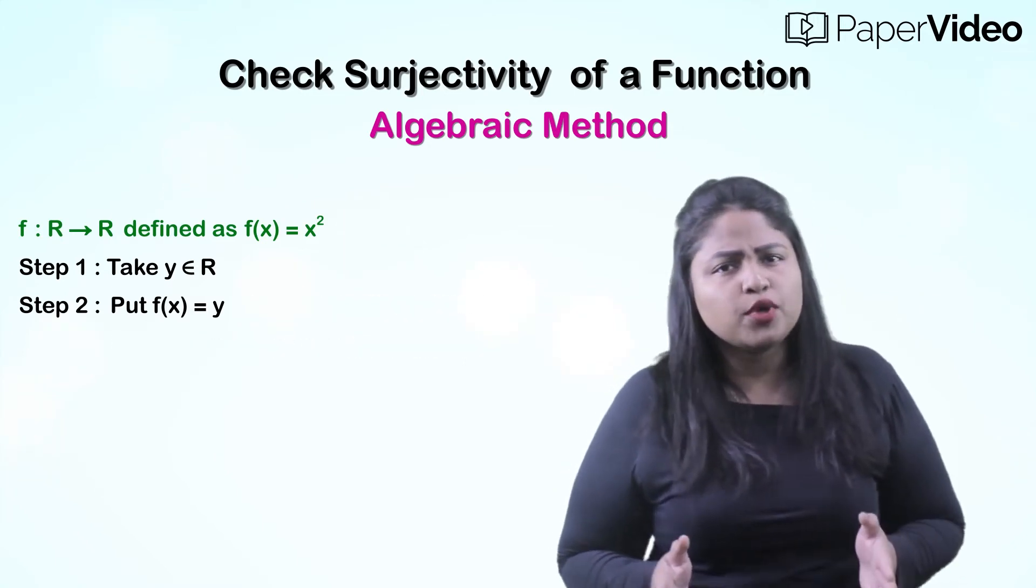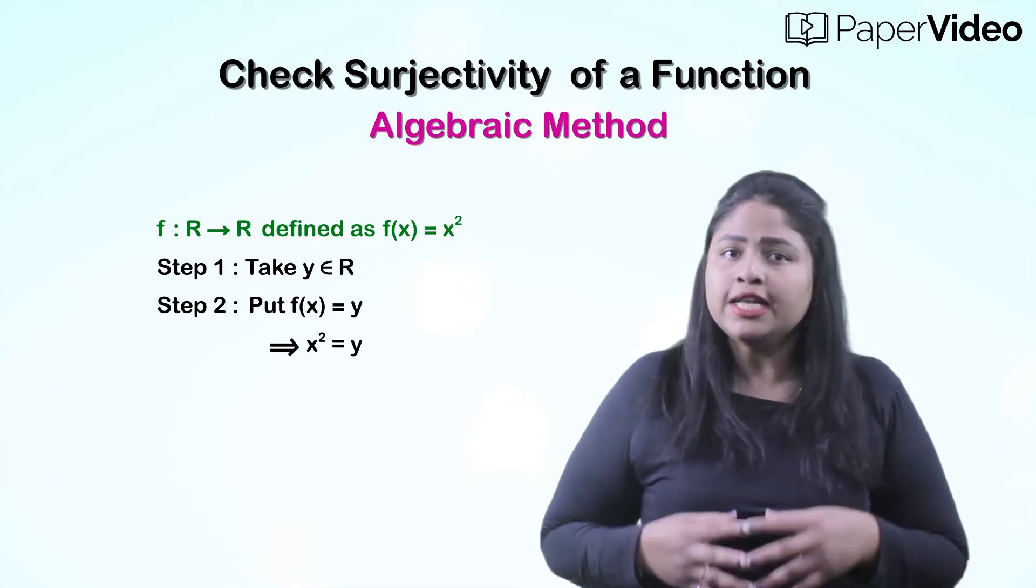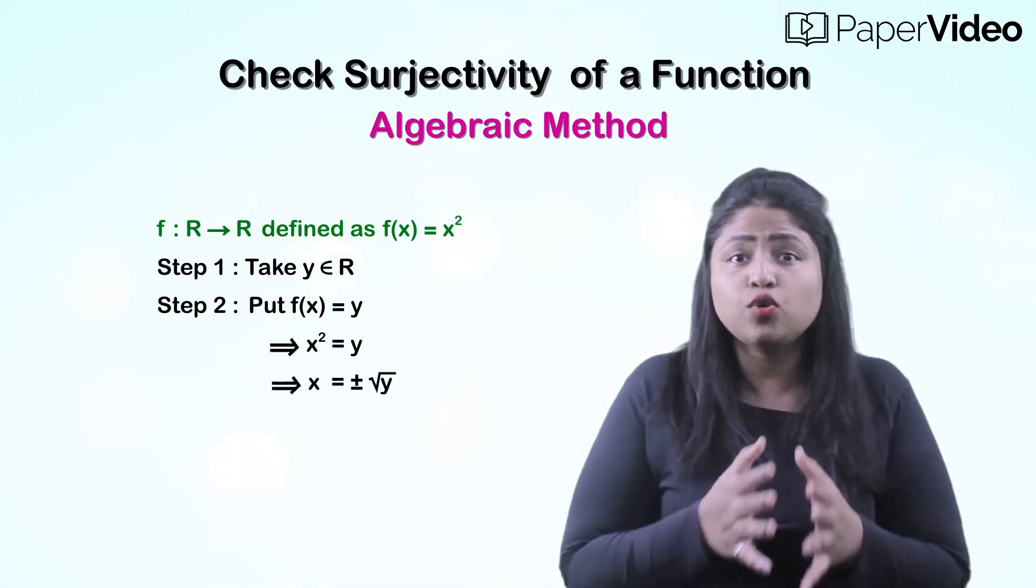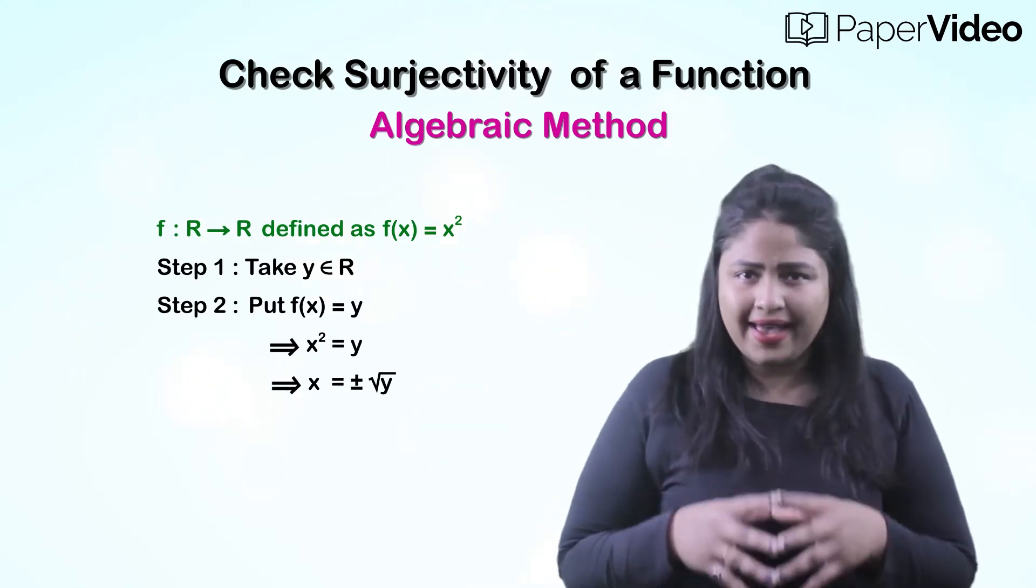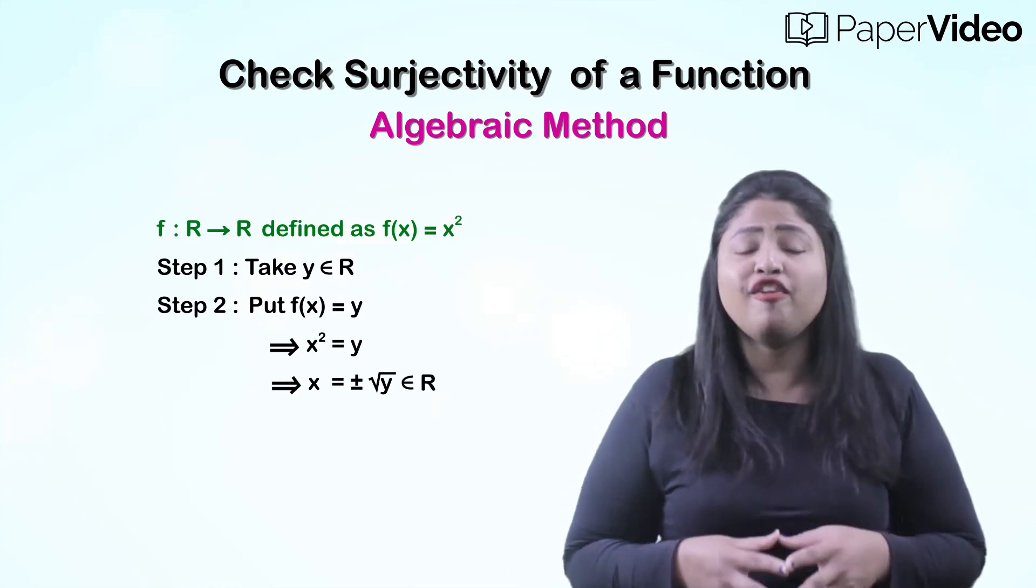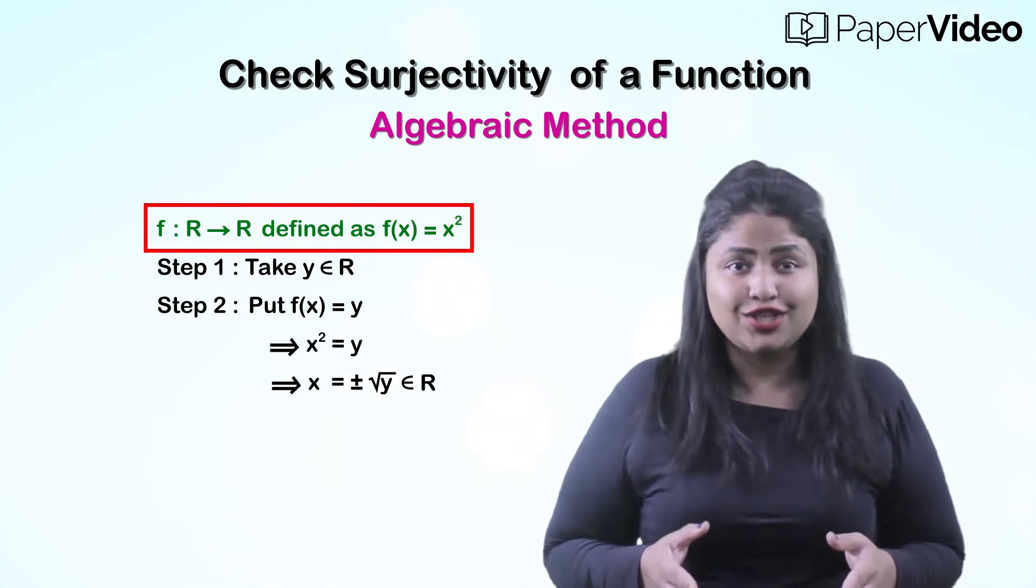So here we will put f(x) equals to y, which implies x equals to plus or minus square root of y. Clearly, all values of x equals to plus or minus square root of y belong to the set of real numbers. Therefore, we can say that the given function is a surjection.